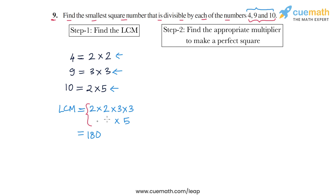So in the next step, we have to find an appropriate multiplier by which to multiply this LCM to get a perfect square. So the LCM once again is 2 into 2 into 3 into 3 into 5.